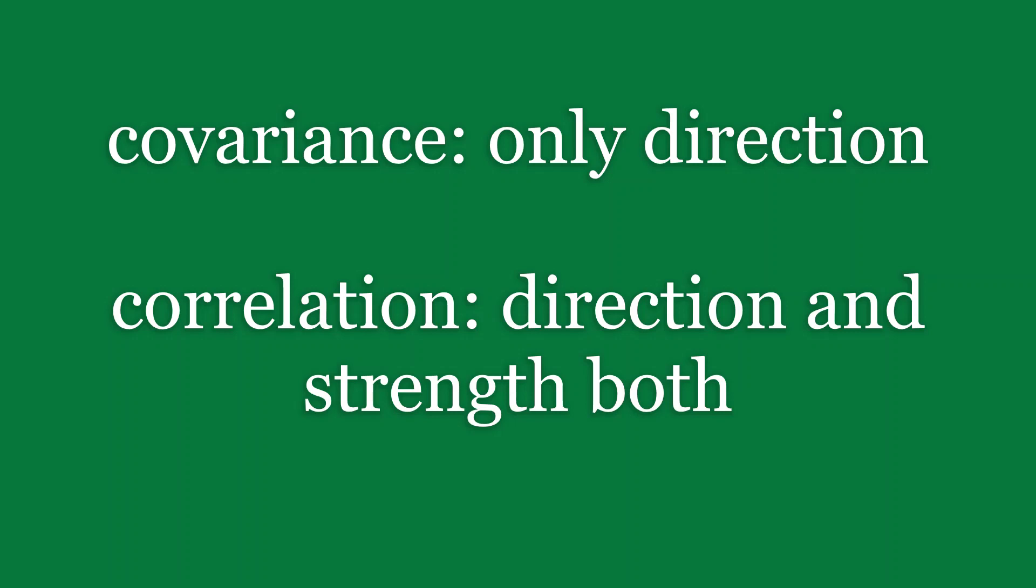Covariance signifies the direction of the linear relationship between the two variables. By direction we mean if the variables are directly proportional or inversely proportional to each other. So basically, the covariance can be any number between the two opposite infinites. In short, I would like to say covariance only measures how the two variables change together, not the dependency of one variable on another one.